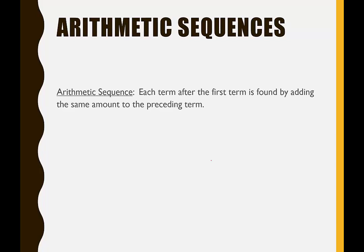Arithmetic sequences: after the first term, each term is found by adding the same amount to the preceding term. And I want to caution you here. I want you to remember that subtracting is a form of addition, right, because it's equivalent to adding the negative.